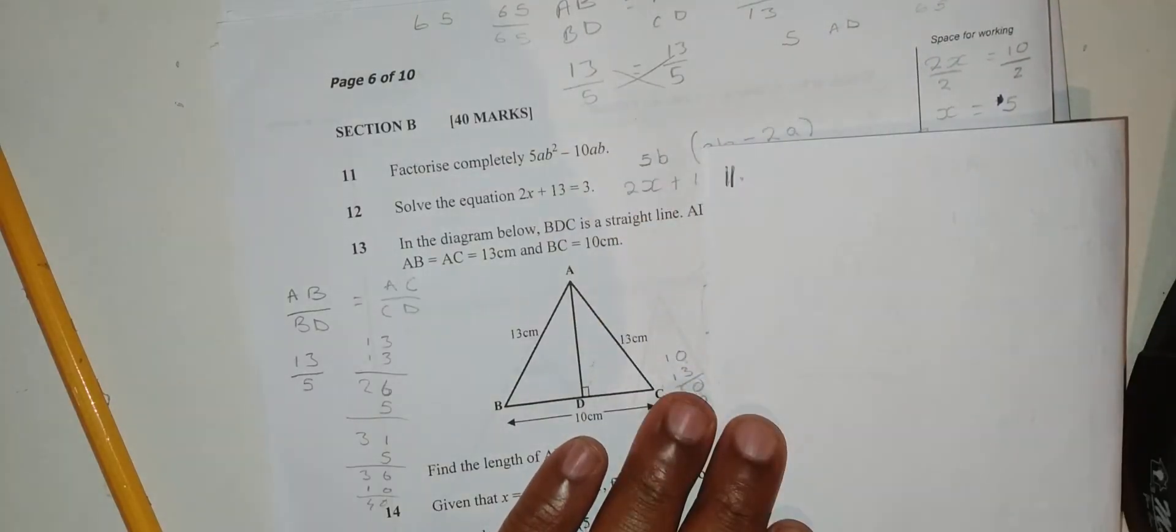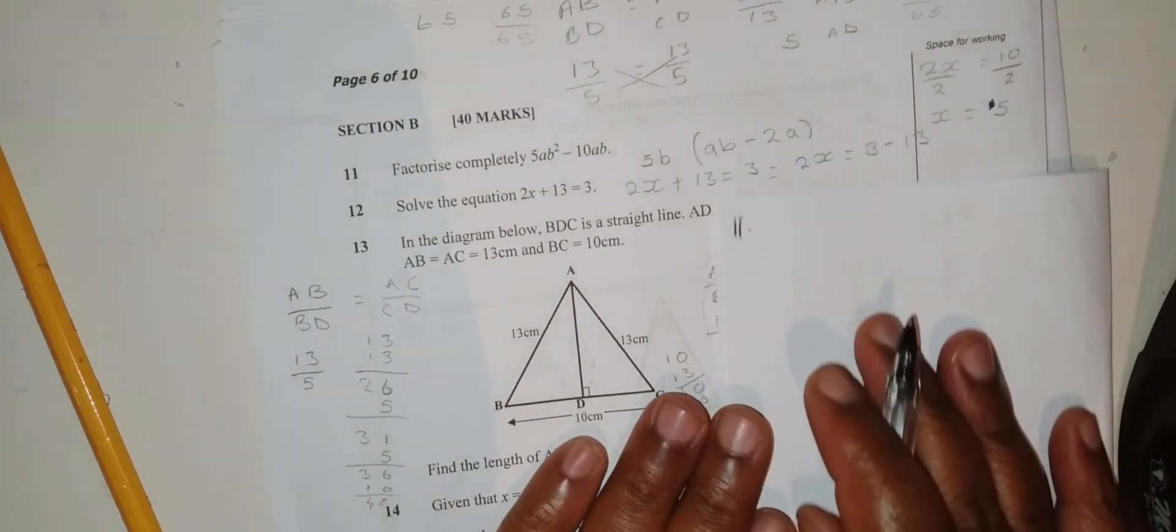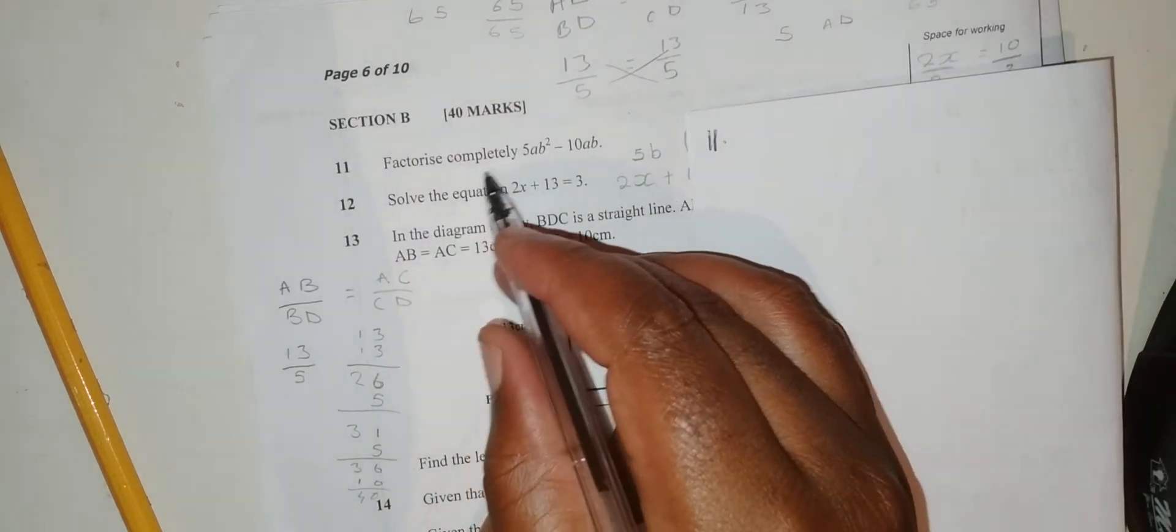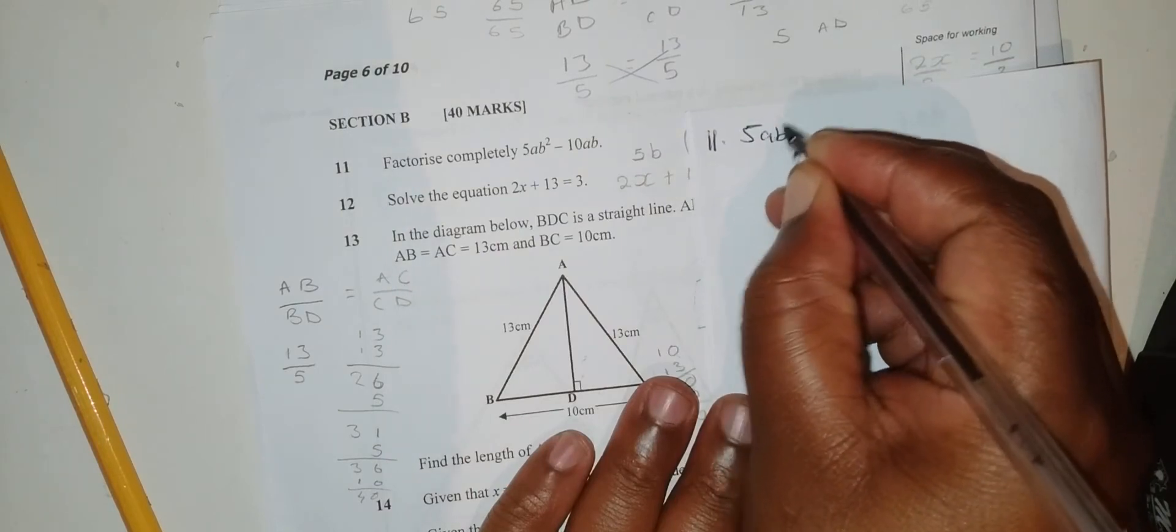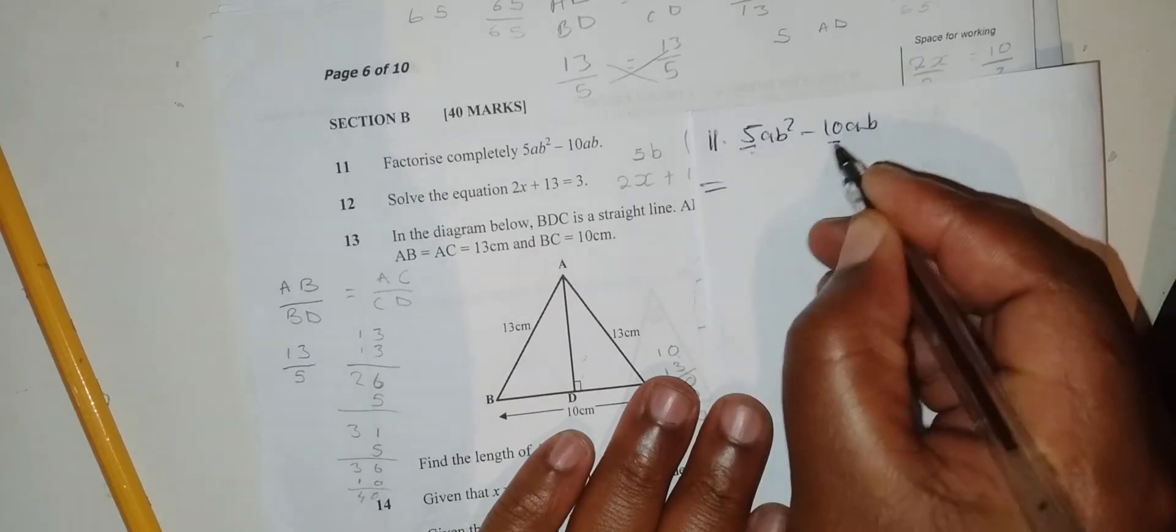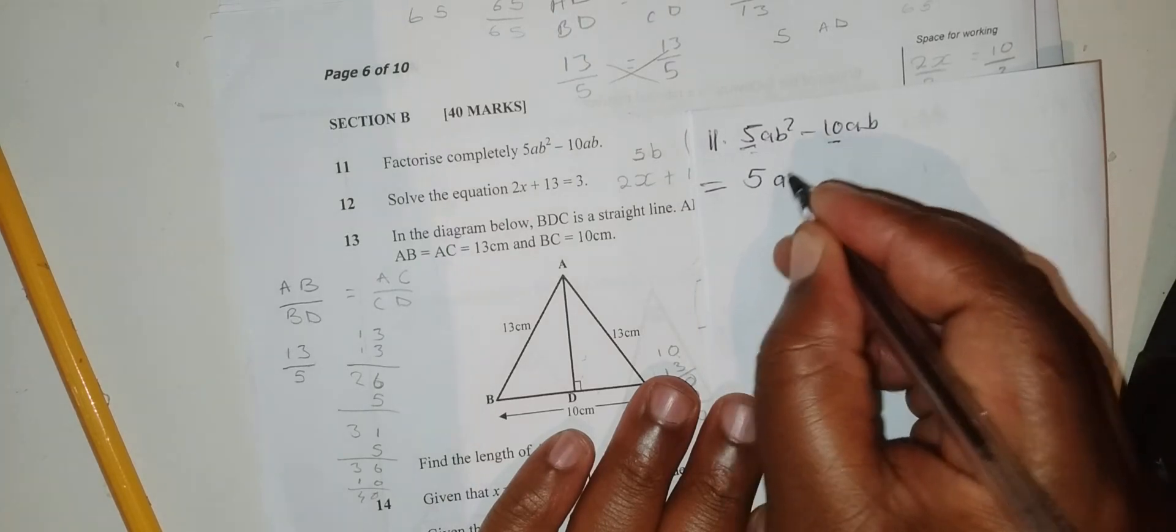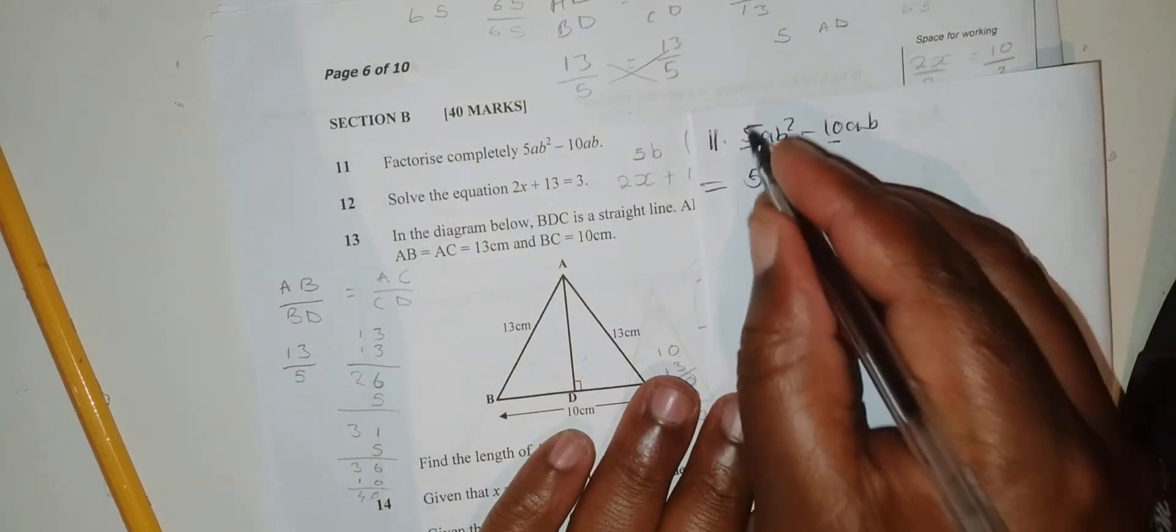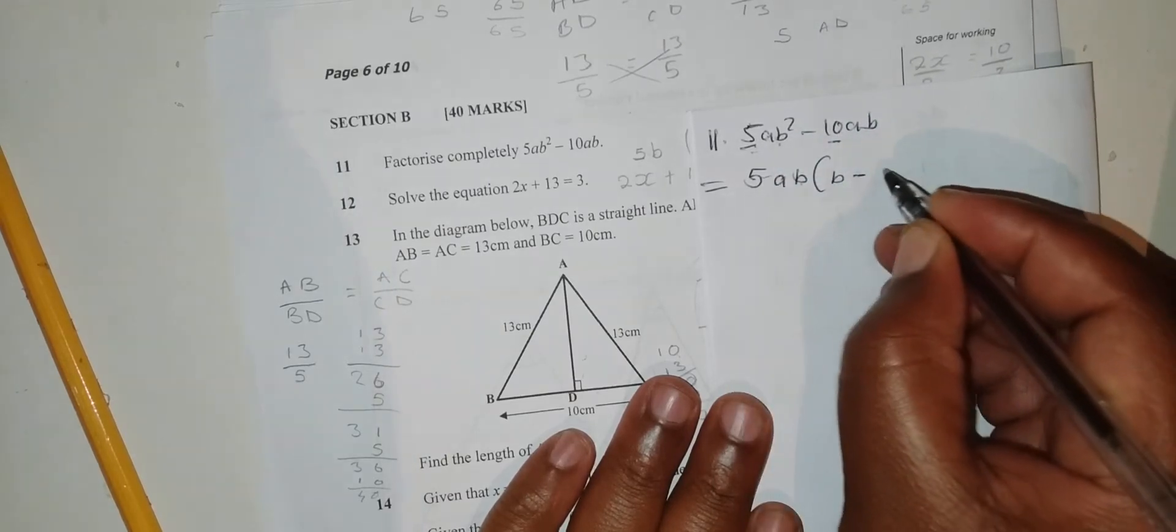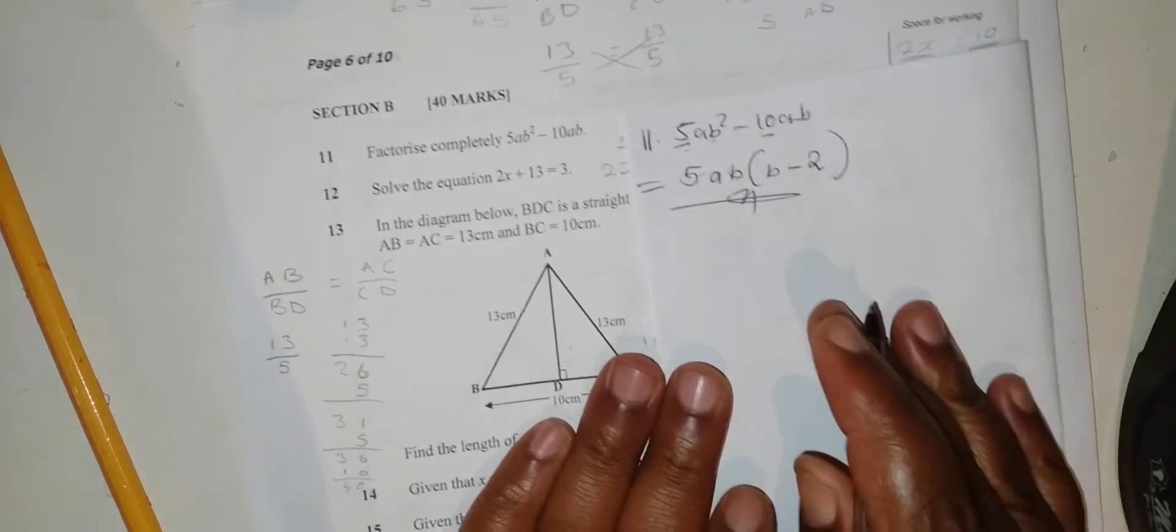Question 11: Factorize completely 5AB squared minus 10AB. 5 and 10, the highest common factor is 5. A and A, I'll go for A. B squared and B, I'll go for B. So we have 5AB times (B minus 2). This is our answer. Number 12: Solve the equation 2x plus 3 equals 13. 2x equals 13 minus 3, which is 10. x equals 10 divided by 2, which is 5.